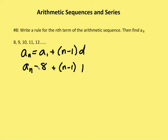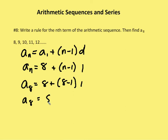So here's my rule. Now we're going to find out what a sub eight is. A sub eight is equal to eight plus, with n equal to eight, eight minus one times one — or a sub eight equals eight plus seven times one, which is seven, so it equals 15.